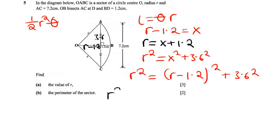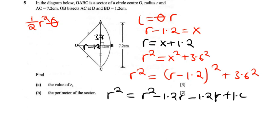Let's break this down. We have R² equals — so that would be R times R giving R², then R times 1.2 gives 1.2R, again 1.2R, and then 1.2 times 1.2 is 1.44. Then 3.6 squared is 12.96.